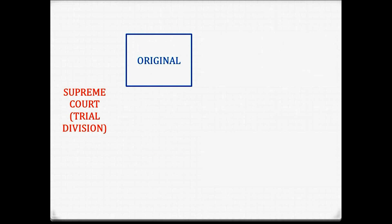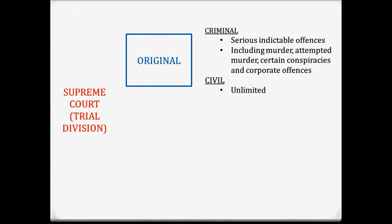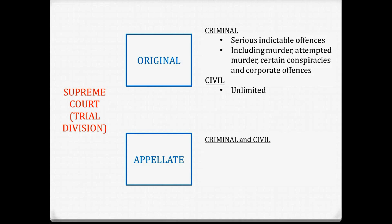The Supreme Court Trial Division's original jurisdiction for criminal cases is the serious indictable offences including murder, attempted murder, certain conspiracies and corporate offences. It can also hear other indictable offences like culpable driving, manslaughter or rape, although those cases will tend to be heard in the County Court. In civil cases, its jurisdiction is unlimited — it can hear cases for any amount of damages and tends to focus more on corporate disputes. Its appellate jurisdiction, in both criminal and civil cases, allows it to hear appeals on a point of law from the Magistrates Court and also from VCAT.